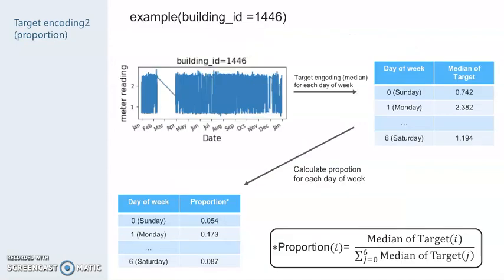This slide shows the second one. We call this technique proportion target encoding. We describe this technique with an example. This is an example of day of week. Firstly, we choose a building ID and calculate median of target value per day of week. Secondly, we calculate its proportion by this formula. Finally, we apply this technique to all other buildings.